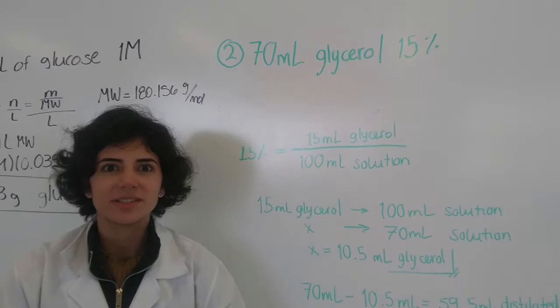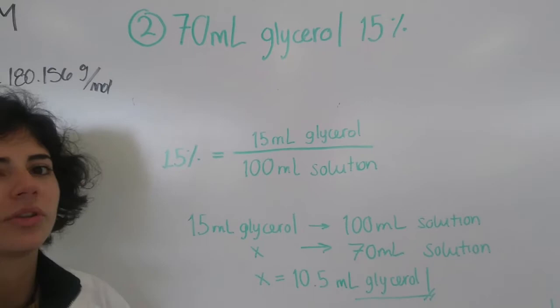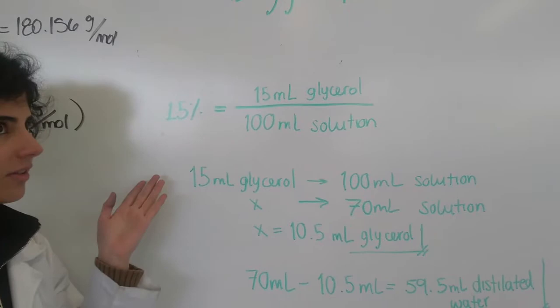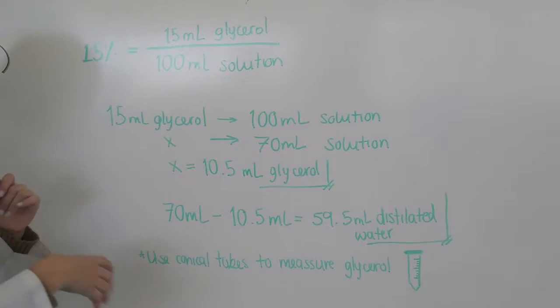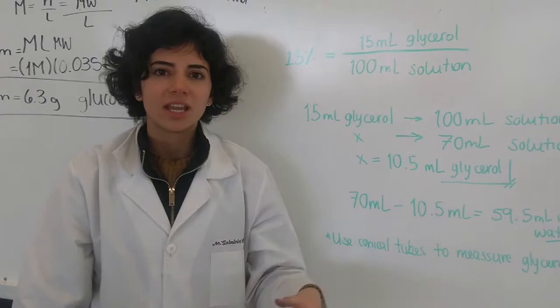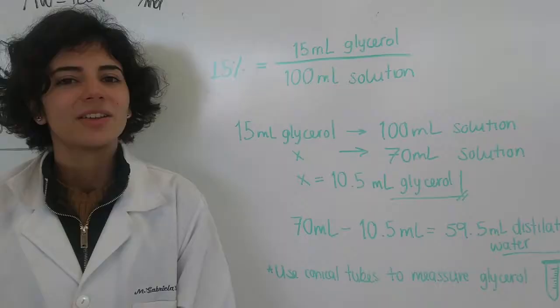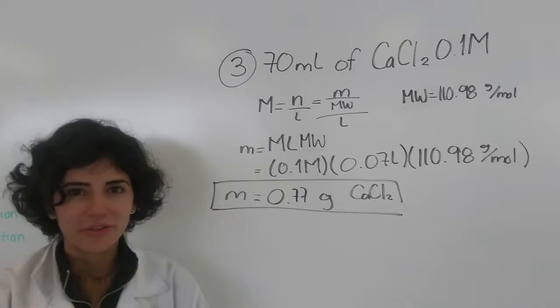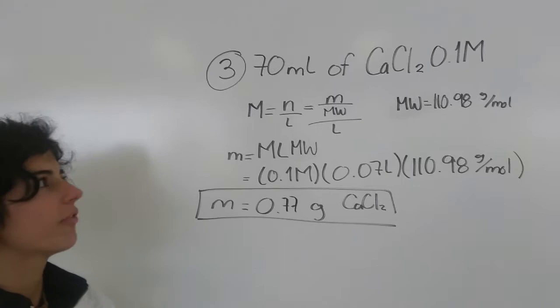For the second solution, we prepare 70 milliliters of glycerol at 15 percent. We use the volume-to-volume relationship: 15 milliliters of glycerol per 100 milliliters of solution, then adjust to the target volume to get the required volume of glycerol. For this preparation, we must use conical tips to measure the material and cannot pipette it directly.